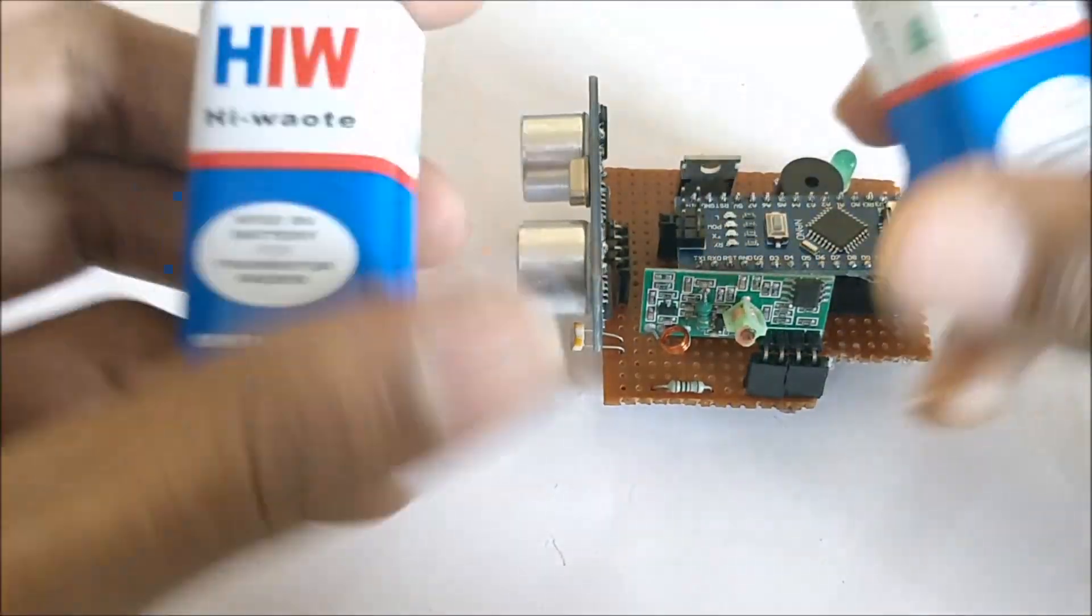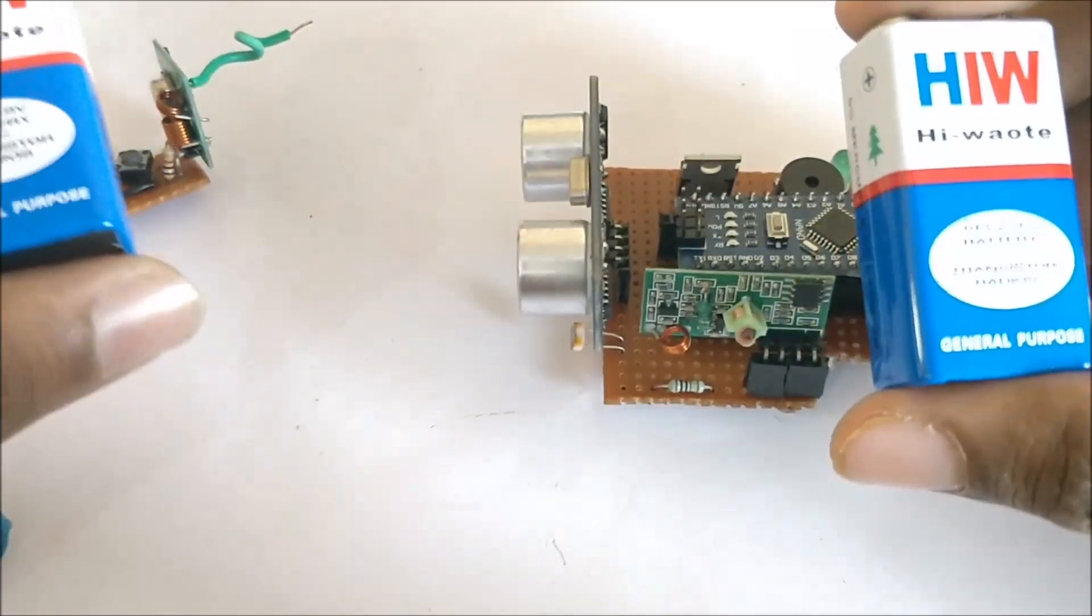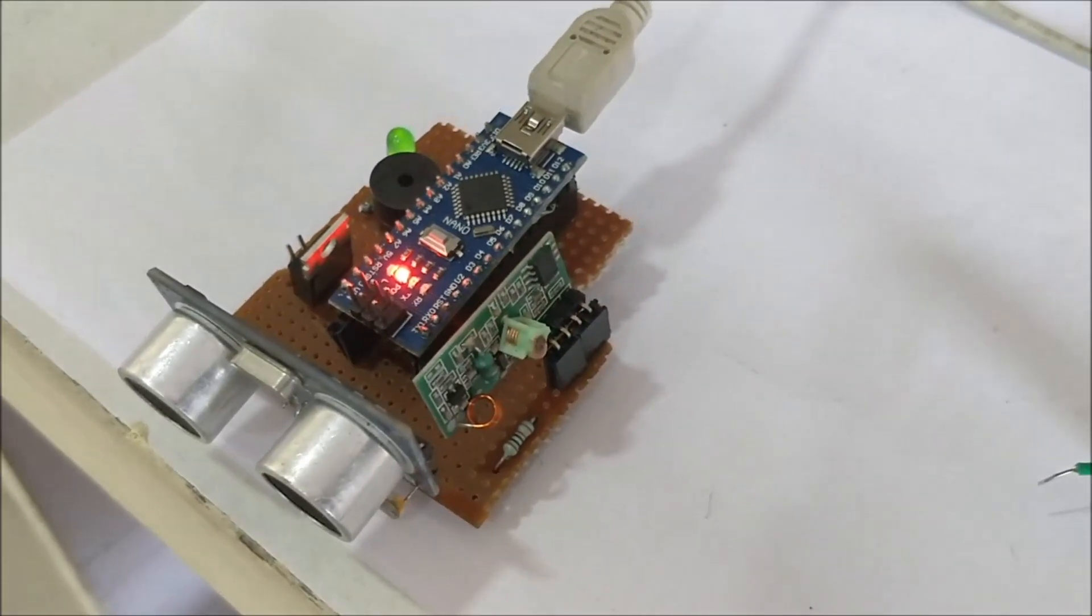To demonstrate the project, I'm using two 9-volt batteries to power both the transmitter and receiver sections. I'm also powering the complete setup using my laptop so I can show you the serial monitor readings. Let's go ahead and check the working of this project.